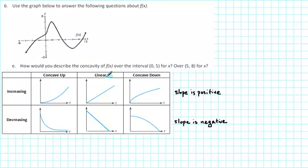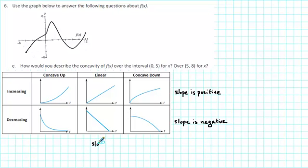Now for concavity, concavity has something to do with the curvature of the graph. Notice for linear functions that there is no curvature — it's just a straight line. The slope is not only positive, but it's also constant. For the decreasing line, the slope is negative but also constant. So for linear functions, the slope is constant, and when the slope is constant there isn't any curvature — the graph is not curving up or curving down.